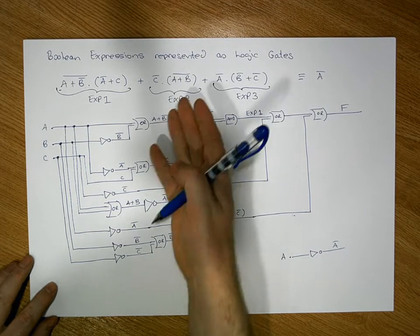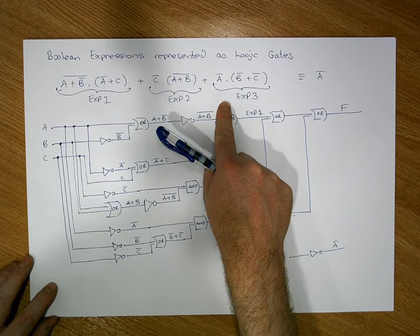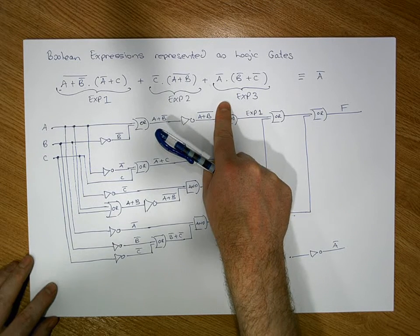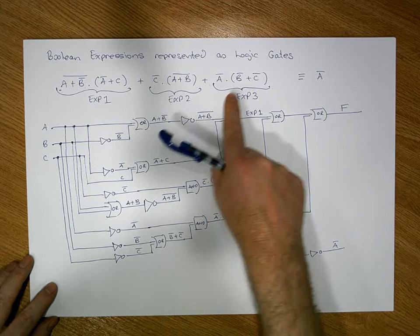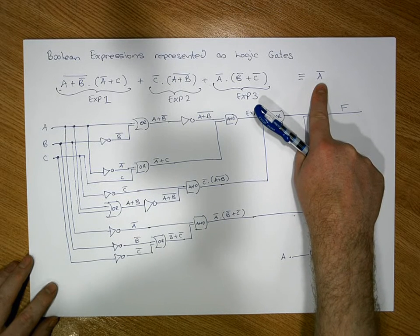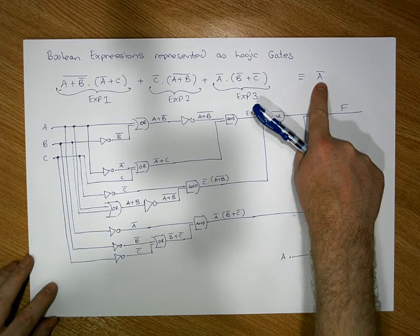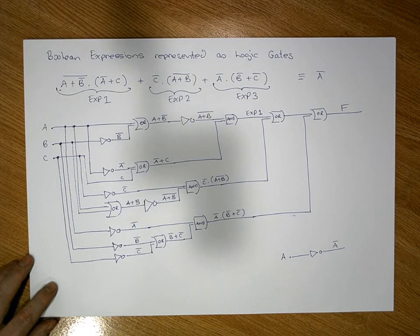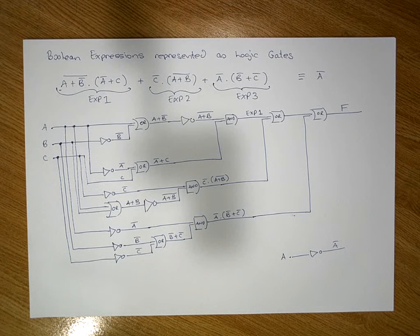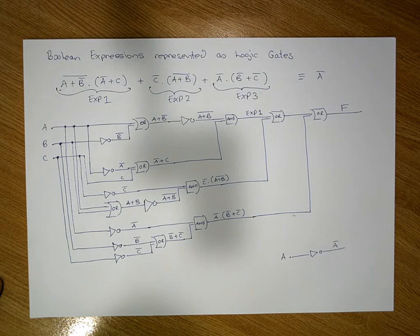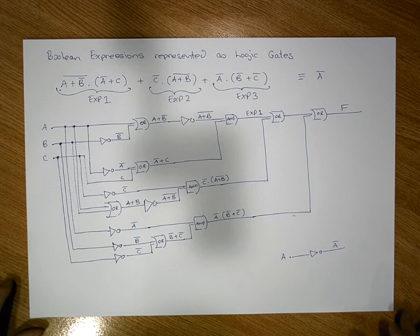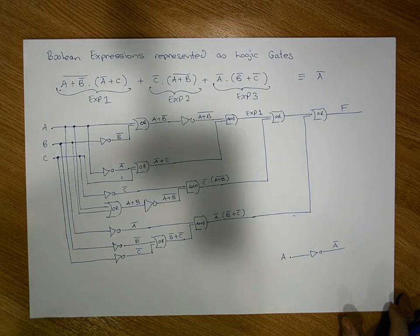So this complex circuit is actually logically equivalent to just a single inverter on A, giving A-bar. We can prove this by building the truth table for the full expression and comparing it to the truth table of A-bar — the outputs are the same under all inputs, which is another proof of equivalence. Thanks for your time, bye bye.